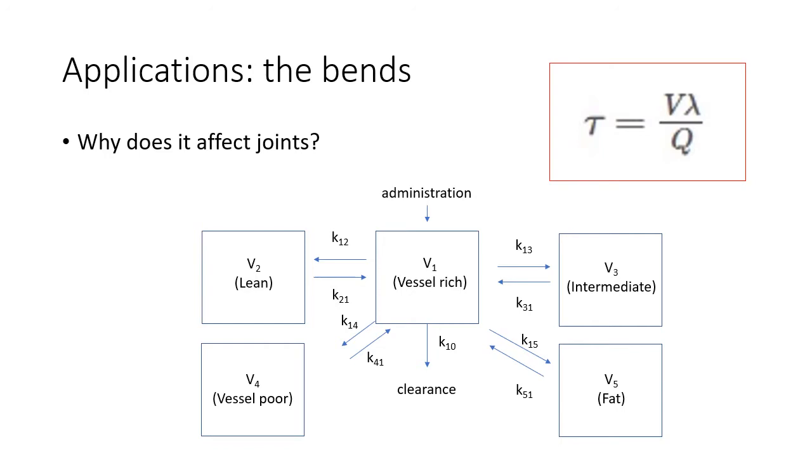Nitrogen bubbles will form everywhere during decompression. It's just that in joint tissue, the rate of removal by the circulation is so slow that large bubbles are able to form.